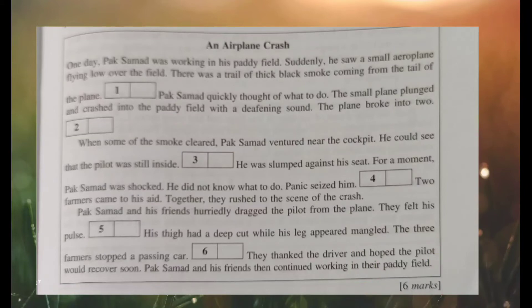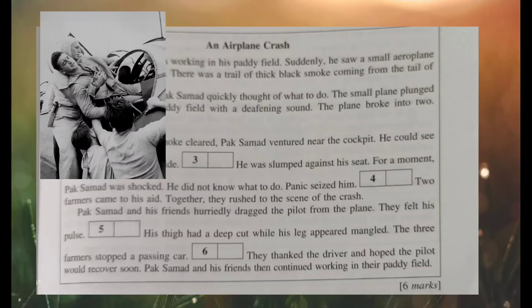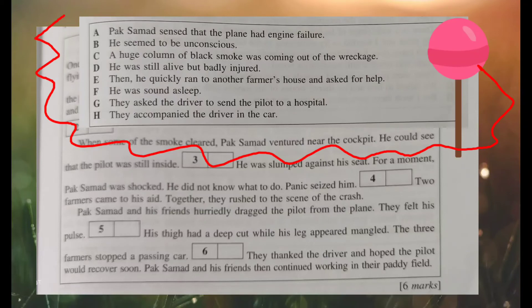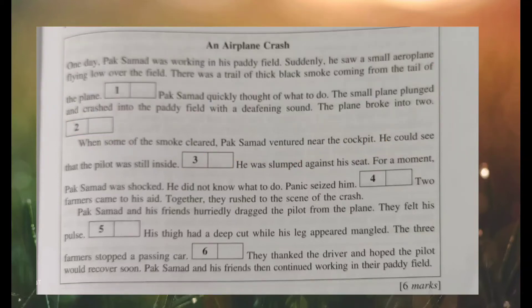Let's continue. For a moment, Pak Saman was shocked and did not know what to do — panic seized him. Then two farmers came to his aid. Together they rushed to the scene of the crash. So you can imagine Pak Saman was very nervous and afraid, and suddenly two friends came to his help. So what should be the answer for number four? The answer is E: he quickly ran to another farmer's house and asked for help, and then two of his friends came to help him. Together they rushed to the scene of the crash.